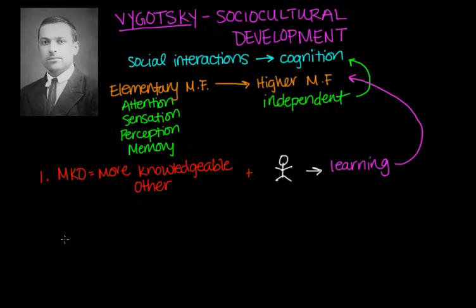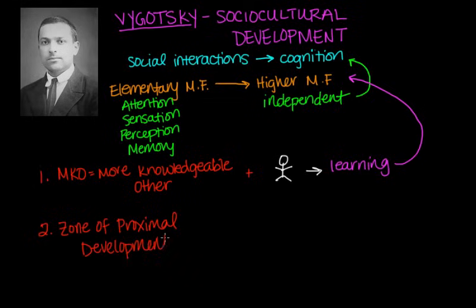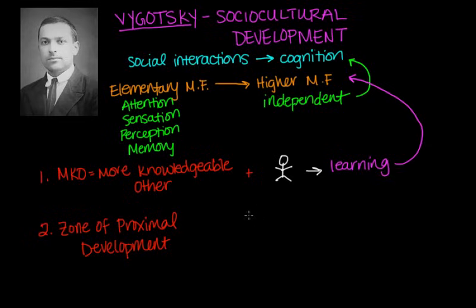The second key term is the zone of proximal development, or ZPD. This is the part where the most sensitive instruction or guidance should be given. In my puzzle example, I was in the zone of proximal development because I was most sensitive to the information my father was giving me — I was between being able to do something and not being able to do something. That zone of guidance allowed me to transition from the skills I already had to a more expanded set of skills.